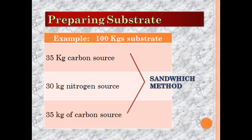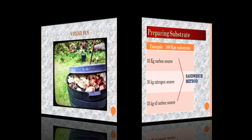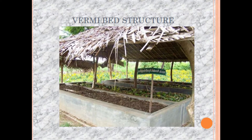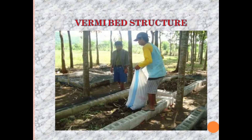In the sandwich method, the first layer is the carbon source material, then on top of that we put the nitrogen source material, and then on top of the nitrogen source material we put carbon source material again, and so on and so forth. Please take a look at the examples of vermi bin and vermi bed structures you can use as reference for making your own vermi bed at home.